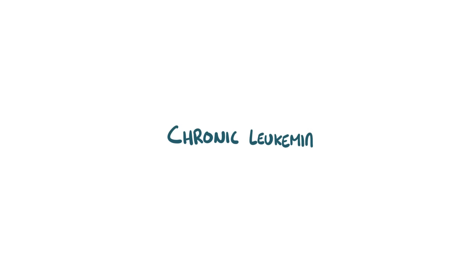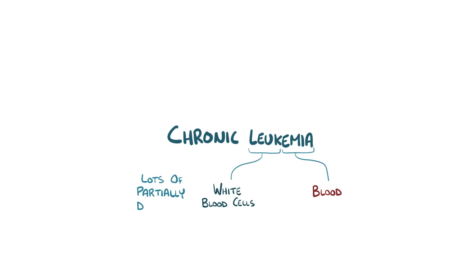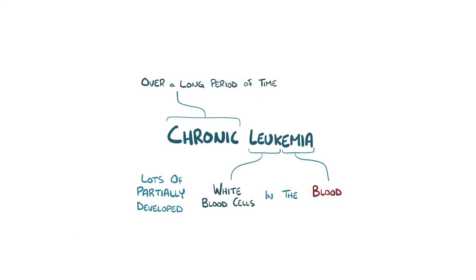With chronic leukemia, 'leuk' refers to white blood cells and 'emia' refers to the blood, so in chronic leukemia there are lots of partially developed white blood cells in the blood over a long period of time. These partially developed white blood cells interfere with the development and function of healthy white blood cells, platelets, and red blood cells.